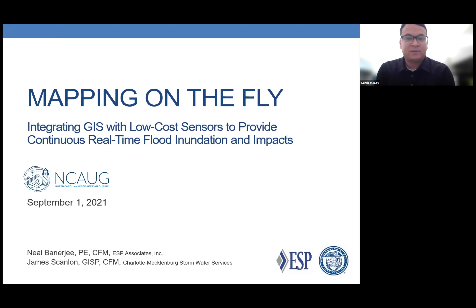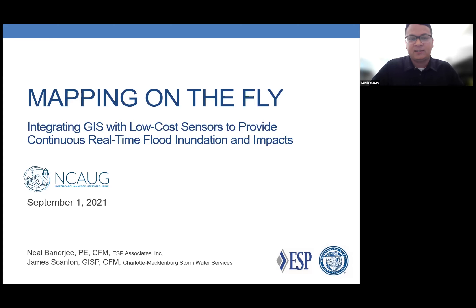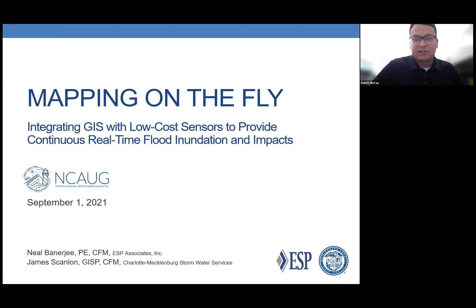Neil has specific expertise in the integration of forecast and observed rainfall and stream data in support of storm event preparation and response, and the development of real-time warning and mapping systems for state agencies and municipalities in the Carolinas and Virginia. He holds a master's degree in civil engineering from UNC Charlotte and a bachelor's in civil engineering and anthropology from the University of Illinois. Please wait until after the presentation to ask questions.